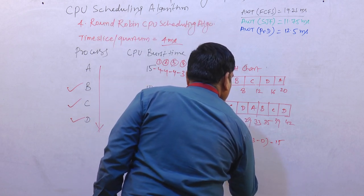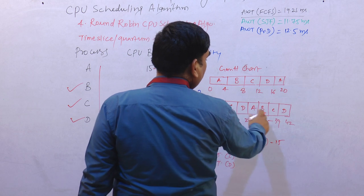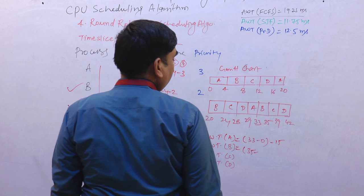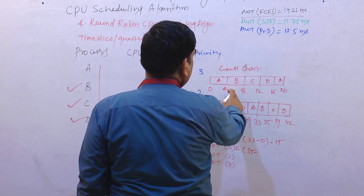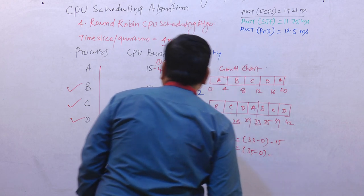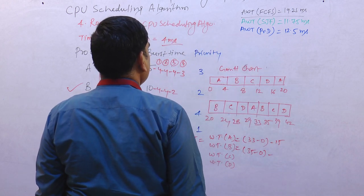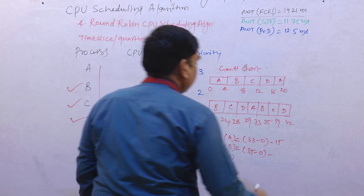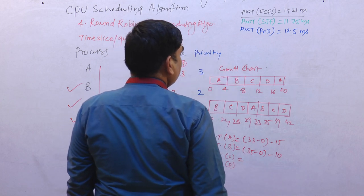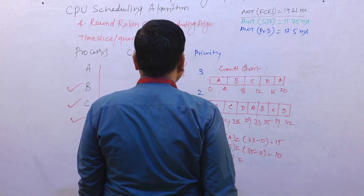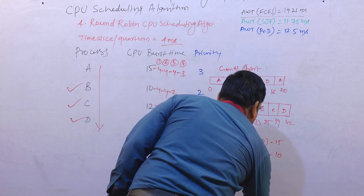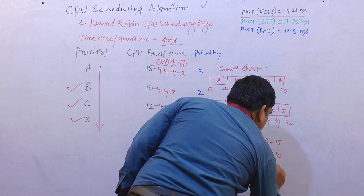For process B, we complete B at 35. B was taken from 0, so that's 35 minus 0 minus 10. For process C, the total time when C completes is 39 minus 0 minus the execution time.